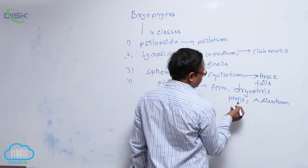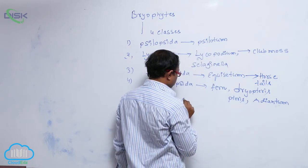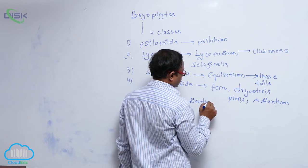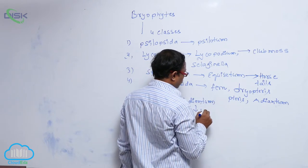After that Pteropsida, Fern, Dryopteris, Pteris and Adiantum. Adiantum is also described as a walking fern.